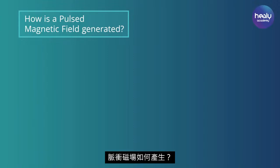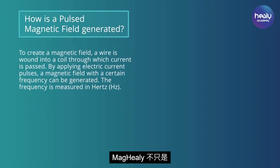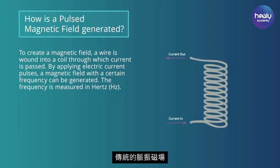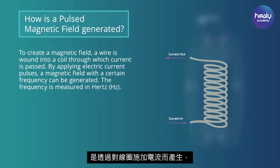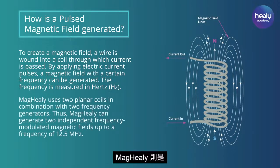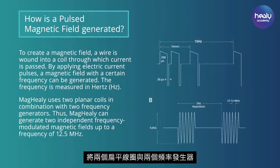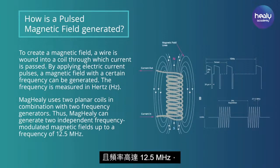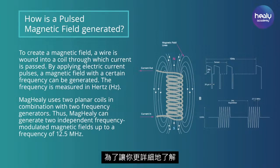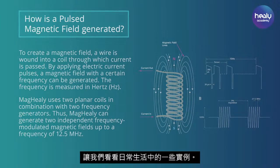Maghealy does not create just a single electromagnetic field. While classical pulsating magnetic fields are created by applying electric current to a coil, Maghealy uses two flat coils in combination with two frequency generators to create two independent frequency-modulated magnetic fields with a frequency of up to 12.5 MHz, interacting with each other and their environment. Let's have a look at some examples in our daily life.